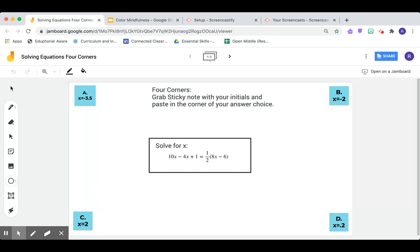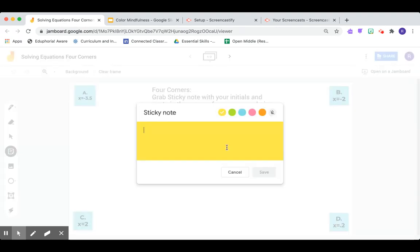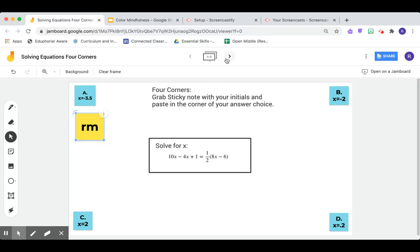Each four corner is just a sticky note over here on the left-hand side. Students are going to add a sticky note, type their initials, click save, and add it to the corner that they choose as their correct answer.